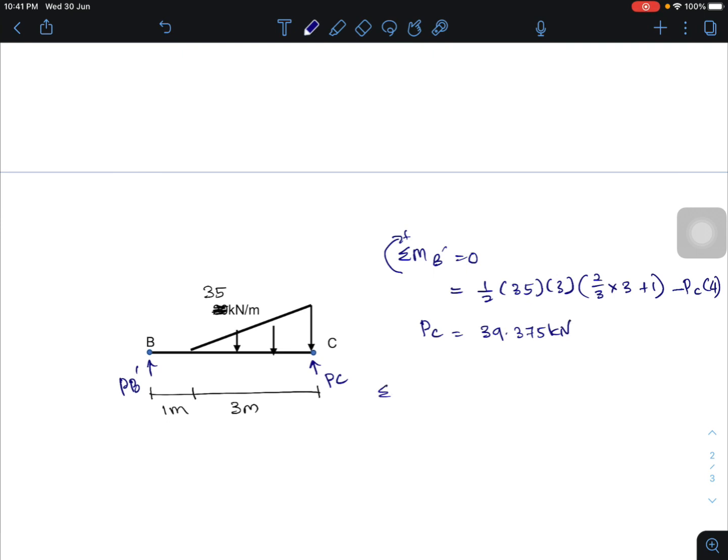And then using vertical equilibrium equation, PB prime plus PC minus 1 over 2 times 35 times 3. So PB prime equals 13.125 kN.